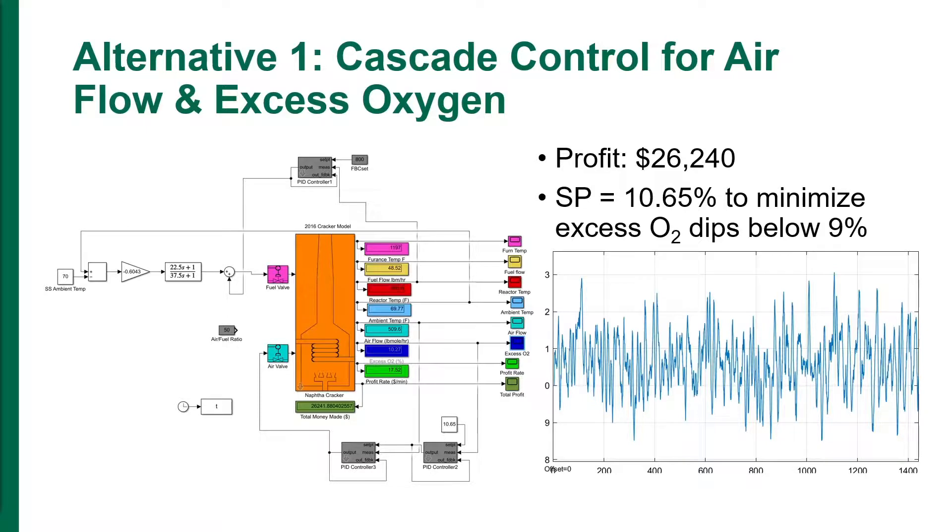Two alternative control schemes were considered to control the excess O2. In the first alternative, the ratio control was replaced with cascade control.